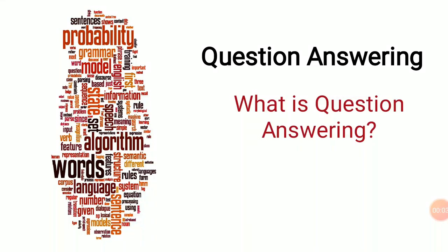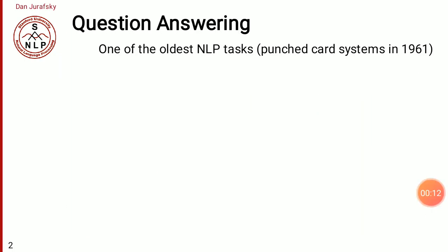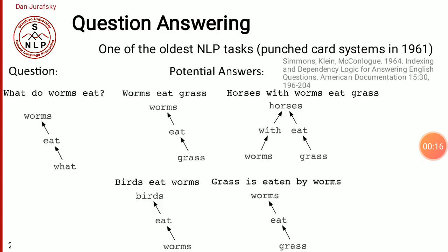Dear students, today I am going to discuss one of the oldest applications of NLP — the question answering system. So what is a question answering system? As I said, it is one of the oldest NLP tasks. Earlier it appeared in the BASEBALL system in 1961.